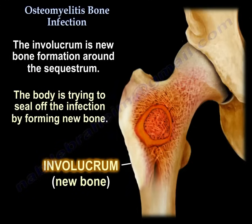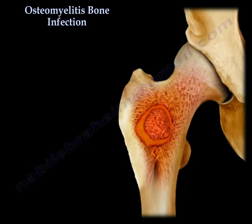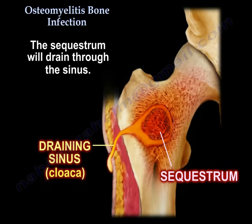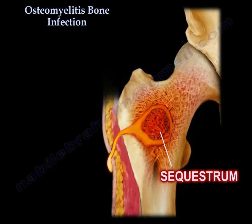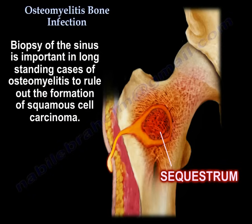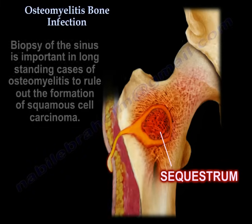The involucrum is a new bone formation around the sequestrum — the body is trying to seal off the infection by forming new bone. The sequestrum will drain through a sinus tract. Biopsy of the sinus is not representative of the infection; multiple deep samples, preferably bone biopsy and cultures, are needed. Biopsy of the sinus is important in long-standing cases of osteomyelitis due to the possible formation of squamous cell carcinoma.